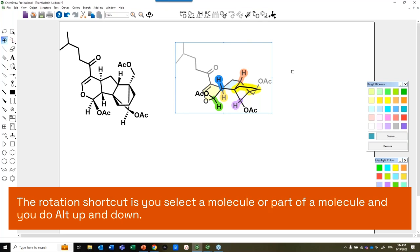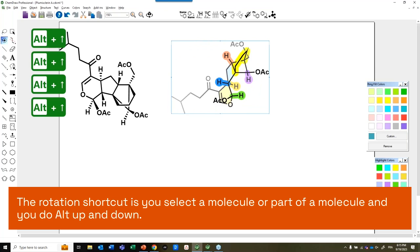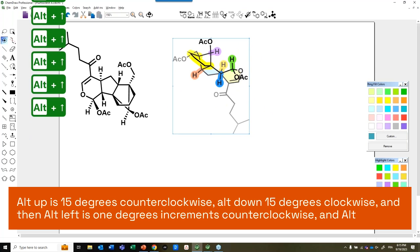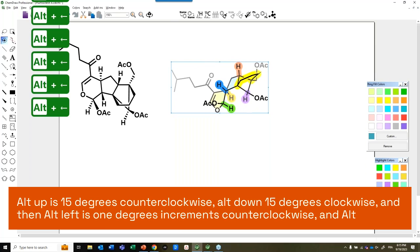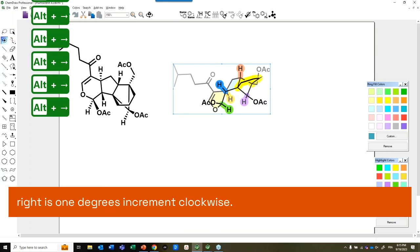The rotation shortcut is you select a molecule or part of a molecule, and you do Alt Up and Down. Alt Up is 15 degrees counterclockwise. Alt Down is 15 degrees clockwise. And then Alt Left is 1 degree increments counterclockwise, and Alt Right is 1 degree increments clockwise.